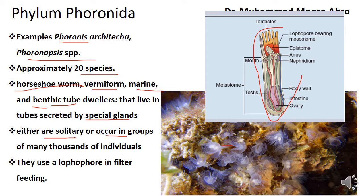In the food gathering mechanism, there is filter feeding via the lophophore structure, which means a group of tentacles. The lophophore-bearing structure filters the food and water, and the food particles are engulfed through the mouth.